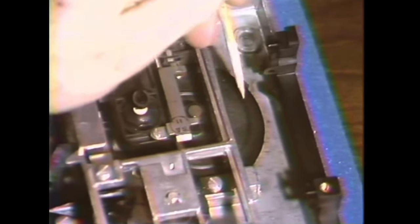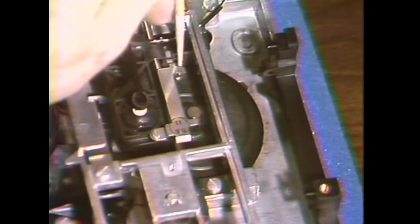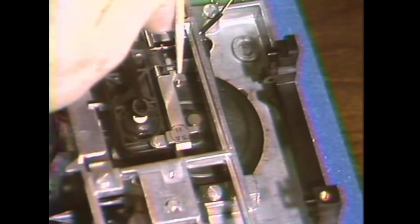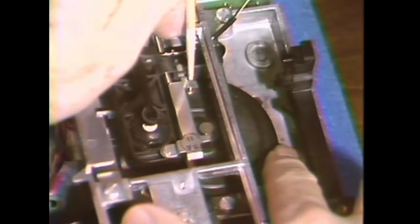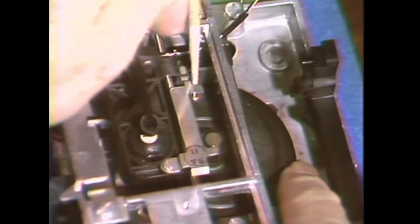Now, use my pointer here. This is the cam, and here's the spiral groove that the cam follower—which is this little brass gadget back here—follows. Right in front of the cam follower is a little white dot.